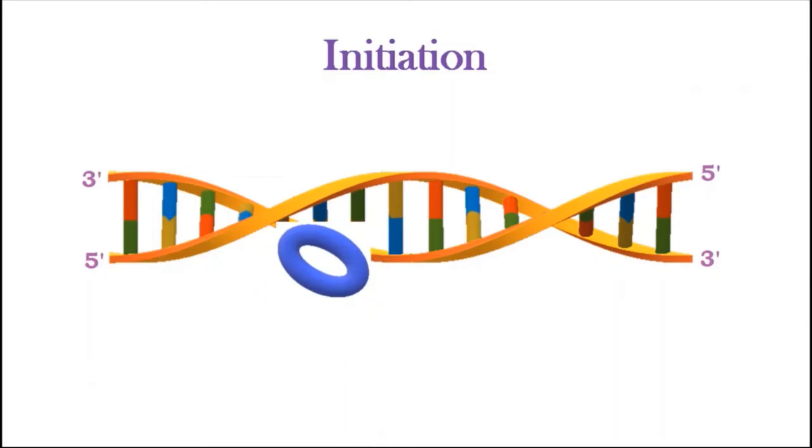The sigma factor of RNA polymerase searches the promoter. Once the RNA polymerase has bound to the promoter, it can open up the DNA.